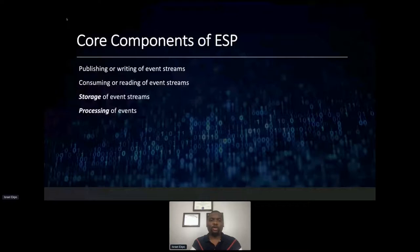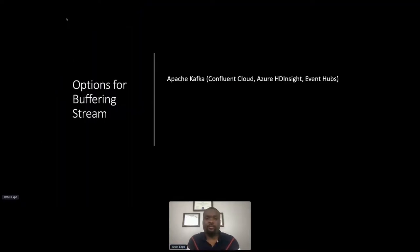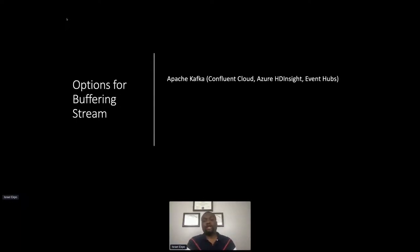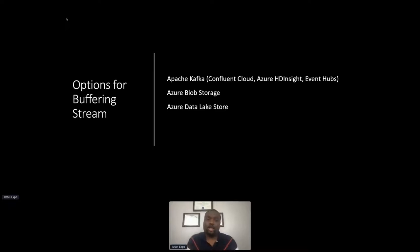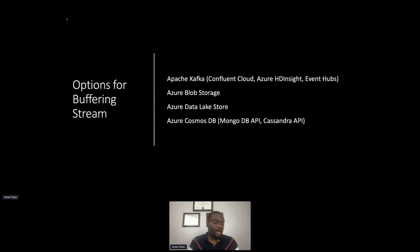Reviewing the core components and buffering mechanisms available on Azure: since Flink doesn't have a built-in event storage mechanism, you have several options. To integrate with the Kafka API for Apache Flink, you can use Confluent Cloud, Azure HDInsight, or Azure Event Hubs for temporary buffering. For batch workloads you can use Blob Storage or Azure Data Lake Storage Gen 2. Through the MongoDB API or Cassandra API, Cosmos DB is also available.